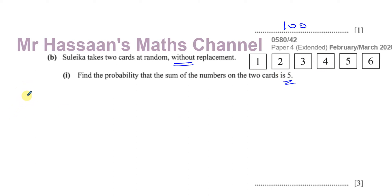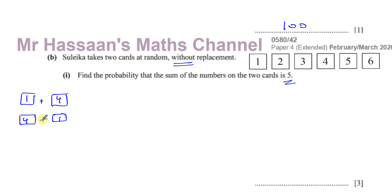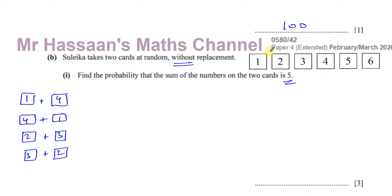Let's look at the possible ways of getting a sum of five. You can pick a first card of one and a second card of four — one plus four is five. Or the first card is four and the second card is one. Or the first card is two and the second card is three, or three then two. There are no other ways of getting a sum of five — just one and four, and two and three.